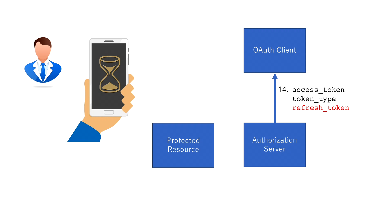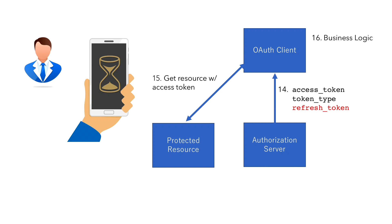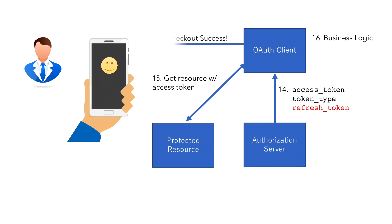and returns the access token and the refresh token. The access token in RFC6749 is a bearer token, while the refresh token is a sender constraint token in general. The client uses the access token to get the protected resource, runs business logic on them, and finally returns access to the user.